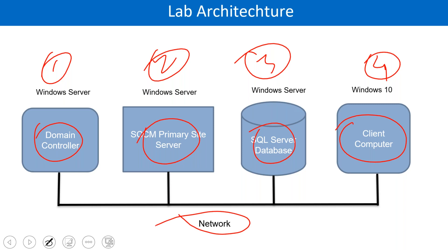There was a question: why don't we create the SQL server and SCCM primary server on the same machine? We can, but I normally show you based on production environment architecture. Most companies run SCCM on a separate server and SQL on a separate server, because if you combine them and something goes wrong, your database and SCCM are both gone. If you keep them separate, if SCCM fails, your database is still intact.